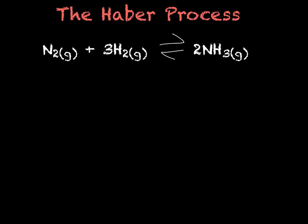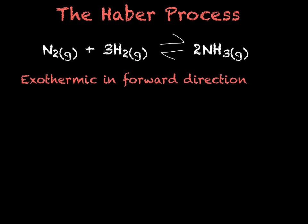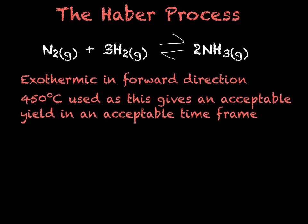In order to control the amount of ammonia being made, we need to move the position of this dynamic equilibrium. The Haber process is exothermic in the forwards direction. This means that if we increase the temperature, we will start to favour the reverse reaction and make nitrogen and hydrogen gas. However, at very low temperatures, we get an incredibly slow rate of reaction. So in order to get a nice rate of reaction, we do need to increase the temperature. In industry, we use a temperature of 450 degrees Celsius. This is a compromise as it gives us an acceptable yield in an acceptable time.